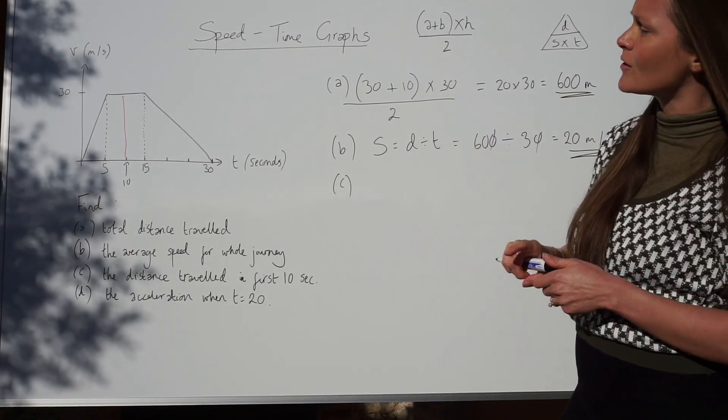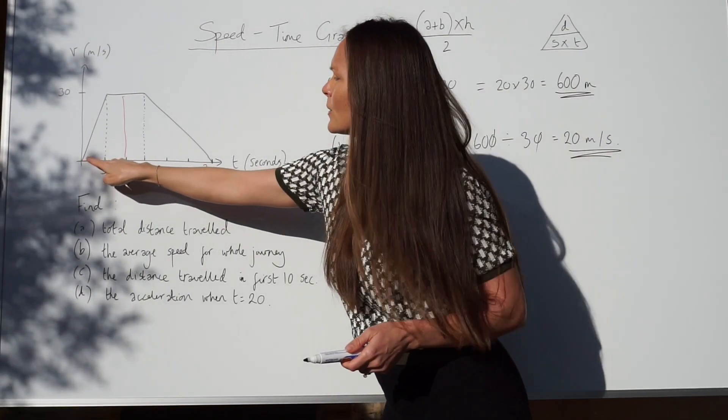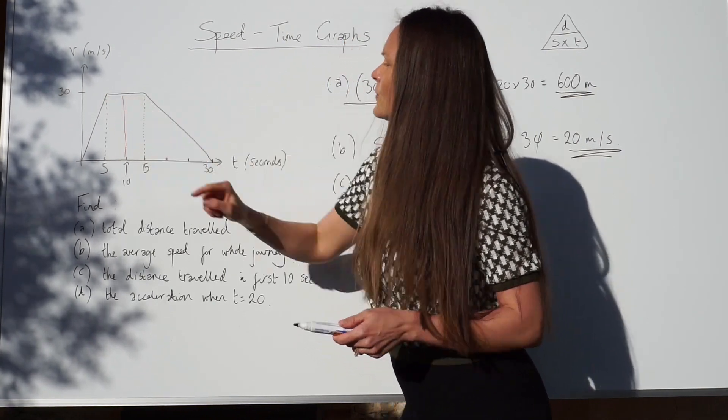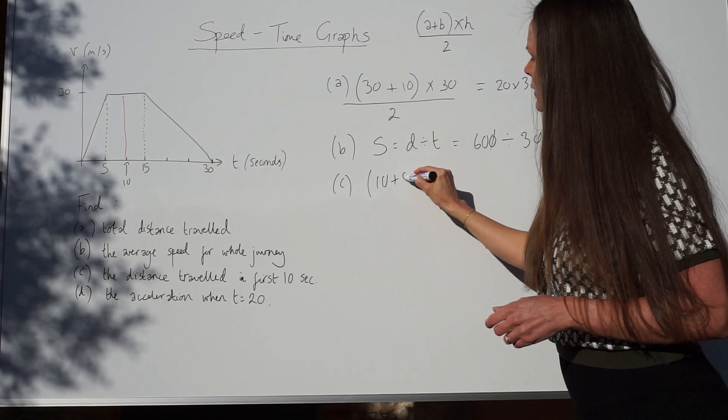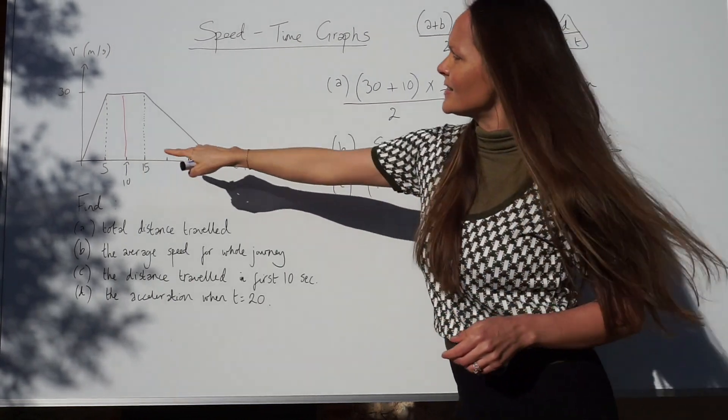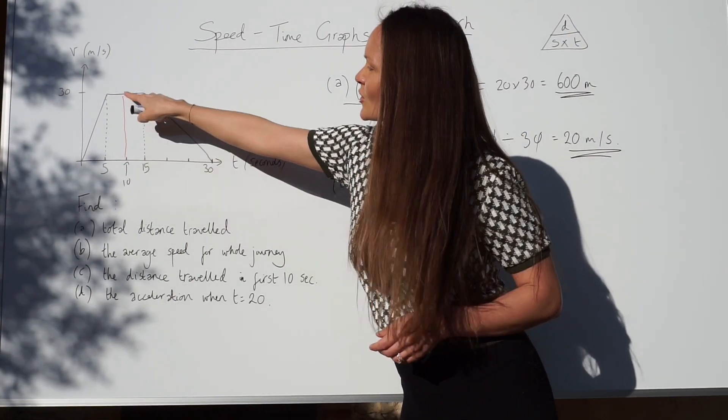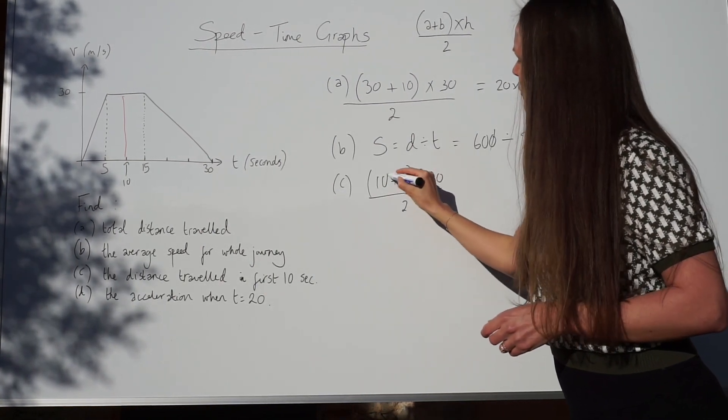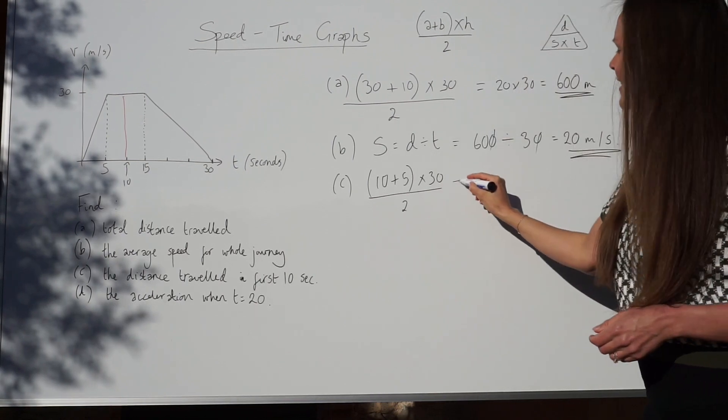So, I'm going to use that formula again. I'm going to start by adding together the parallel sides. This side is 10 and this distance here is just 5. So, 10 plus 5. The height is the same as earlier. It's just 30. And then, likewise, we always divide by 2 when we're working out the area of a trapezium.